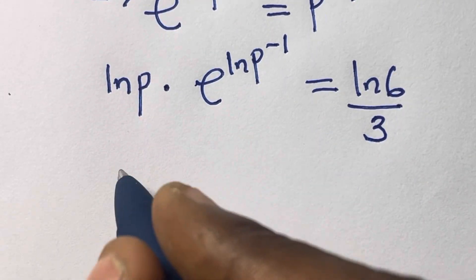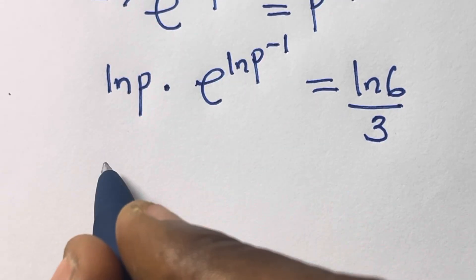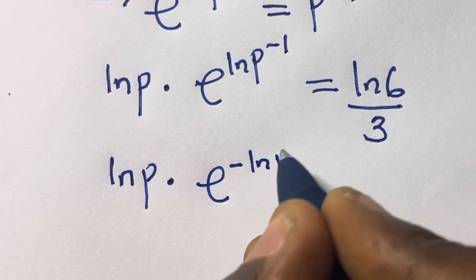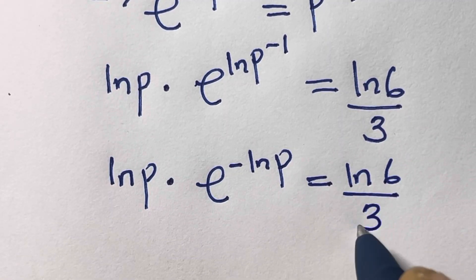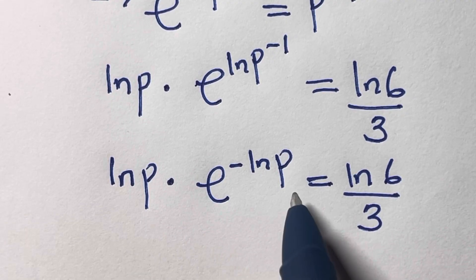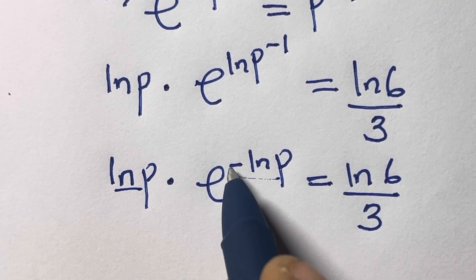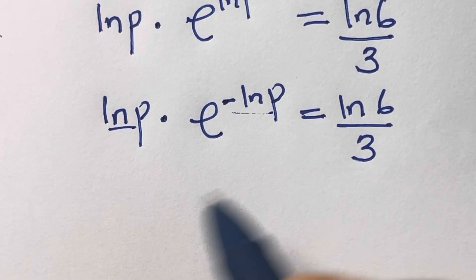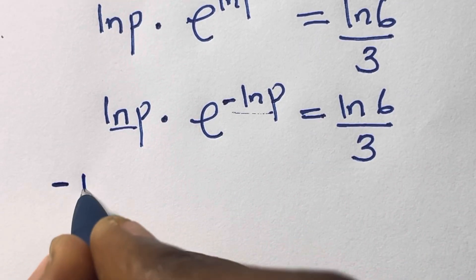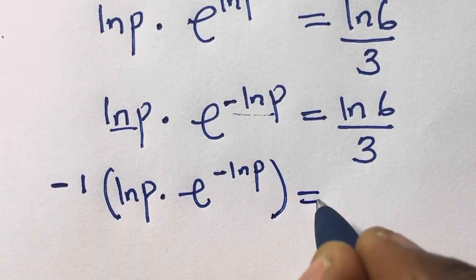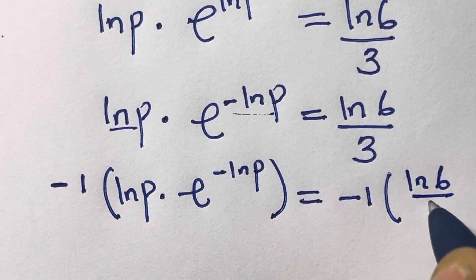The next step is we have ln(p) multiplied by e^(-ln(p)) equals ln(6)/3. We want to apply the Lambert W function, where the base and the power must be the same. We see a minus sign here, so we multiply both sides by minus 1, giving minus ln(p) times e^(-ln(p)) equals minus ln(6)/3.